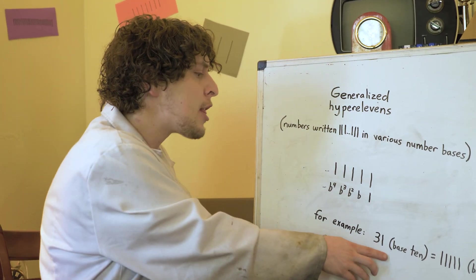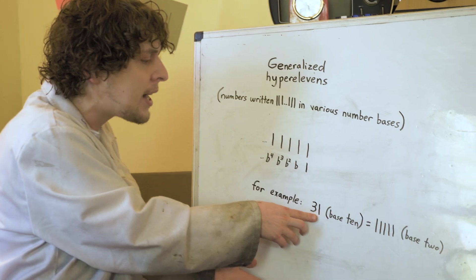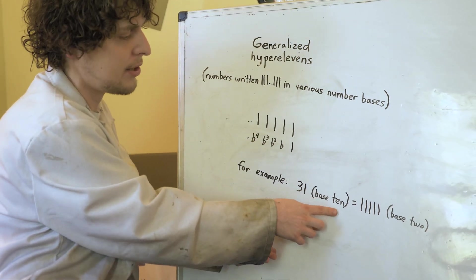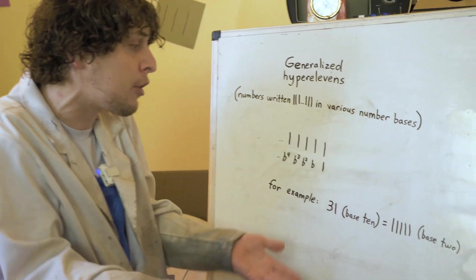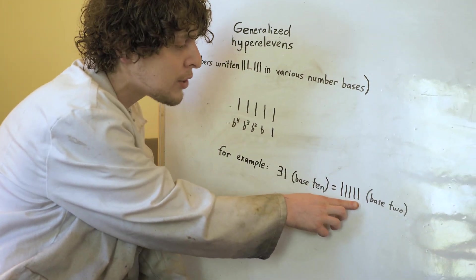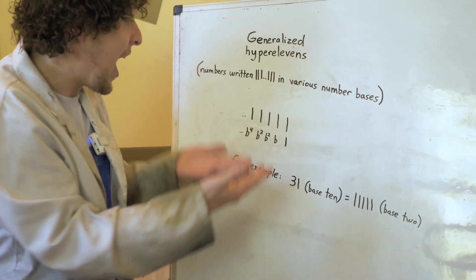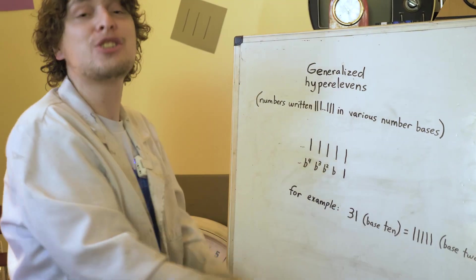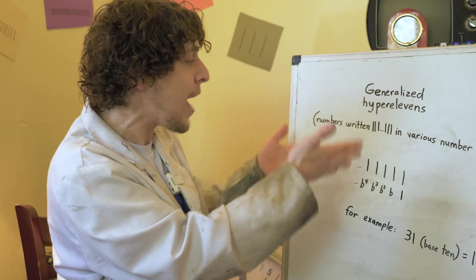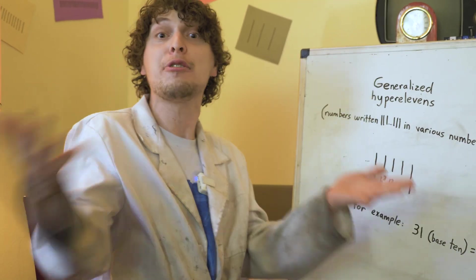An example would be 31 of a thing. We would write like that in our base 10 system. But if we were writing in base two, binary, like for a computer, we would write that amount of things as 111111. A hyper 11, and in fact a hyper 11 prime.